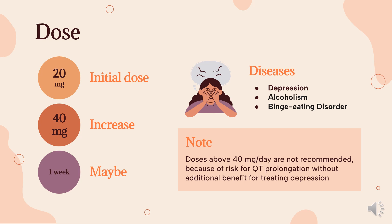Alcoholism: Do not exceed 40 mg per day because of increased risk for QT prolongation. Hot flashes (off-label): Initial dose 10 mg PO once daily; may increase to 20 mg per day after one week. Obsessive-compulsive disorder (off-label): Initial 20 mg per day; may titrate to 40–60 mg per day. Improvement may be seen 4–6 weeks after initiating therapy.